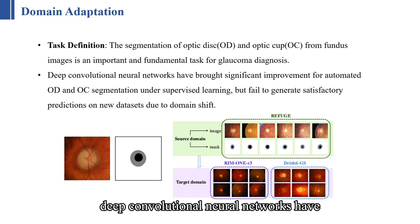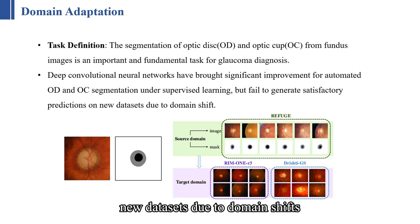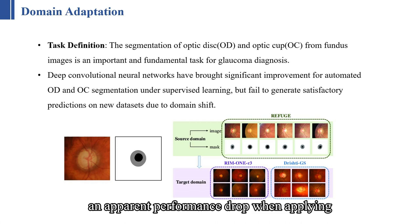Deep convolutional neural networks have brought significant improvement for automated OD and OC segmentation under supervised learning settings, but they often fail to generate accurate predictions on new datasets due to domain shifts. These shifts can cause an apparent performance drop when applying a source-trained model to the target domain directly.